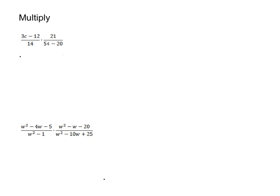In this top one we're going to take out a 3, and what's going to be left after we take the 3 out is going to be C minus 3 divided by 12 is 4. Now in the denominator we're just going to leave that as a 14, and then we still have times 21, and then in the bottom there's a GCF of 5, so we're going to take the 5 out, and that's going to give us C minus 4 as well.